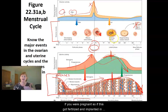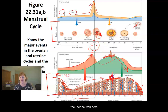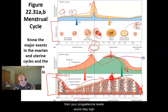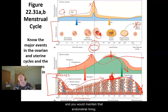If you were pregnant — so if the oocyte got fertilized and implanted in the uterine wall — then your progesterone levels would stay high and you would maintain that endometrial lining.